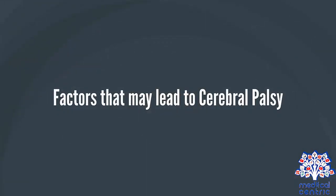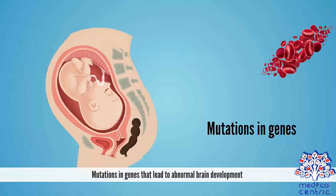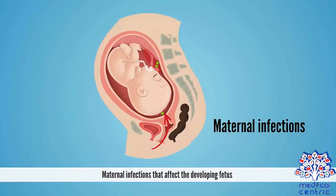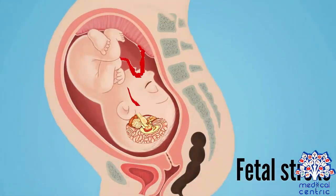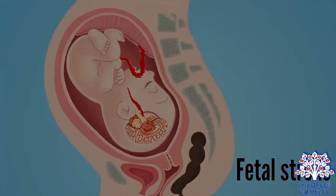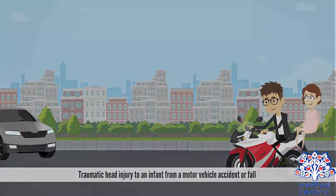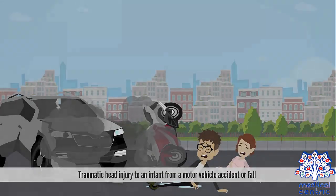Factors that may lead to cerebral palsy include: mutations in genes that lead to abnormal brain development; maternal infections that affect the developing fetus; fetal stroke — a disruption of blood supply to the developing brain; infant infections that cause inflammation in and around the brain; and traumatic head injury to an infant from a motor vehicle accident or fall.